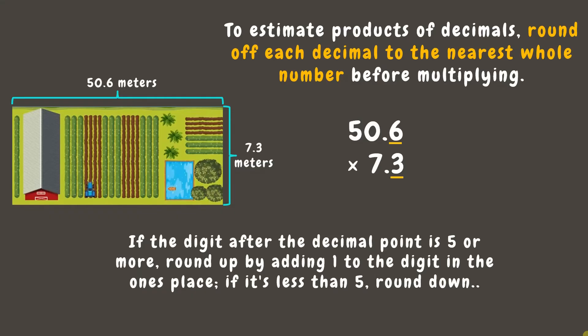For example, in 50.6, since 6 is greater than 5, let's round up by adding 1 to 50, and that's 51. While in 7.3, since 3 is less than 5, we need to round down. The whole number will remain the same while the digits after the whole number become 0. Hence, 7.3 rounded off is 7.